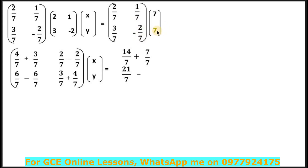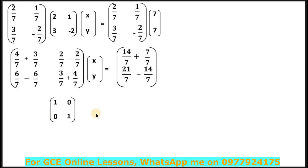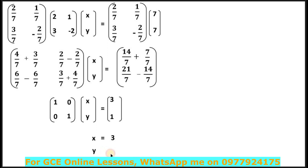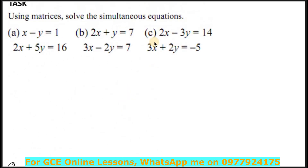After adding, the left side again reduces to the identity matrix, and on the right side you get 3 and 1. So you can go directly to the conclusion: x = 3 and y = 1. Once you reach the identity matrix stage you know your calculations are correct and you can state the final answers without further formality.